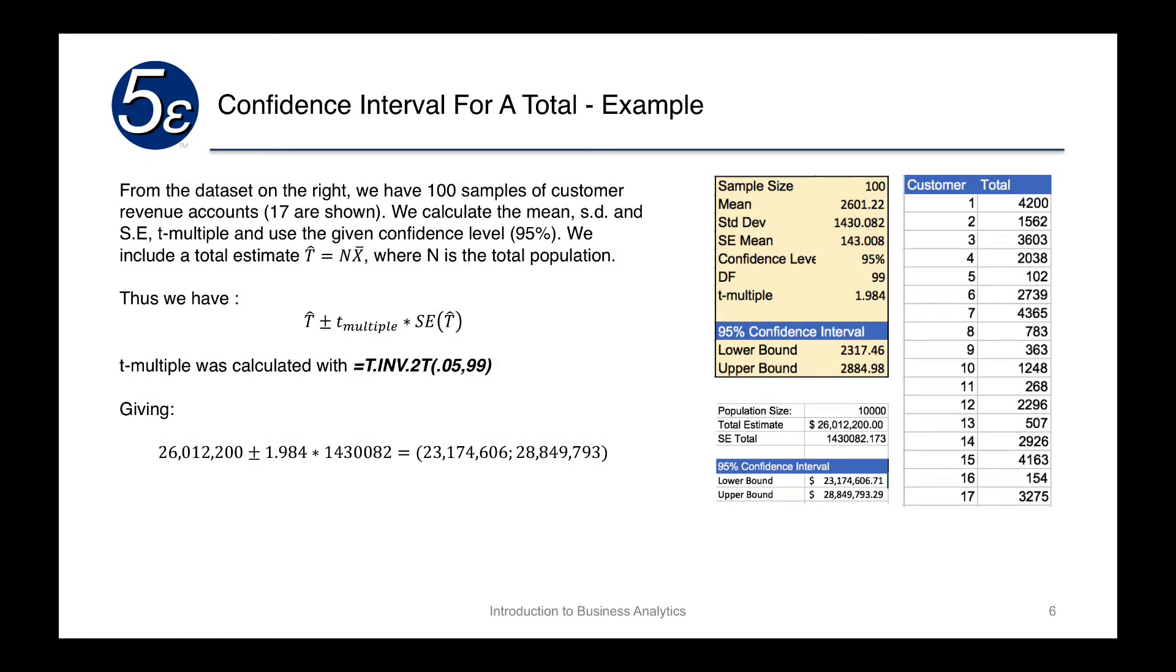From the data set on the right, we have 100 samples of customer revenue accounts, but we only show 17. We calculate our mean and standard deviation, which you can see on the right is 26.01 and the standard deviation of 14.30. We also have calculated the standard error and the T multiple in the yellow box.